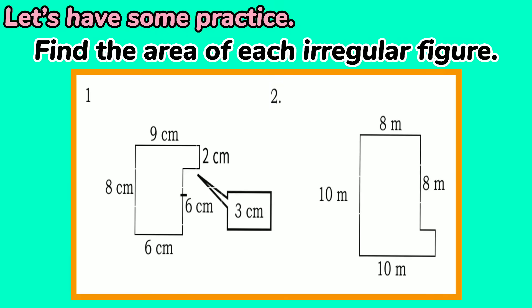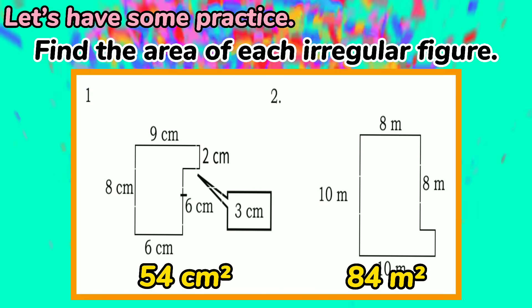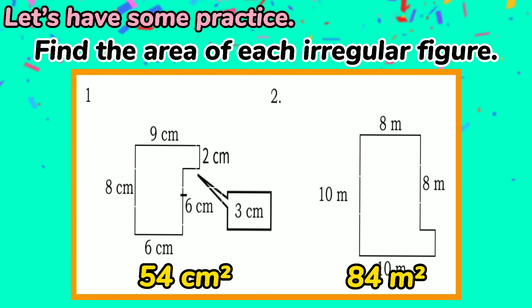Let's have some practice. Find the area of each irregular figure. Let's now answer. Number 1: the area is 54 square centimeters. Number 2: the area is 84 square meters. Good job, kids!